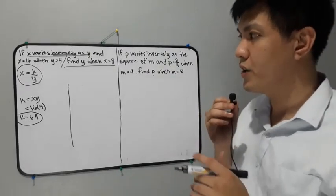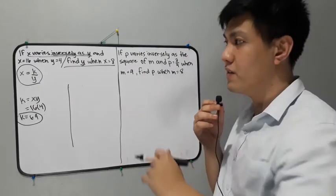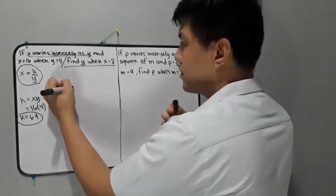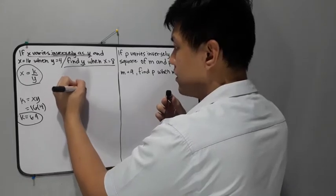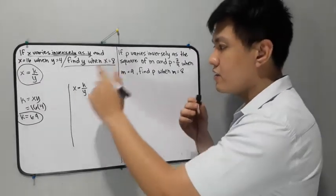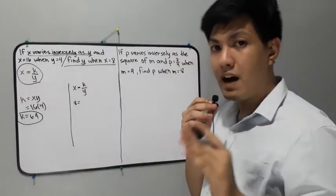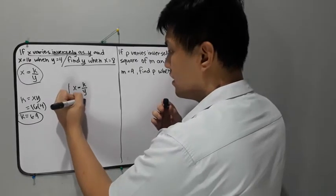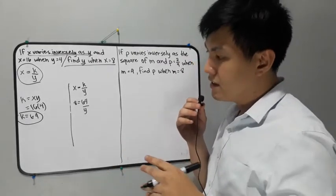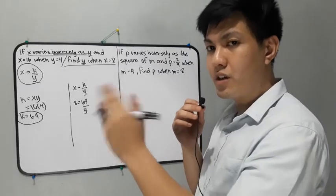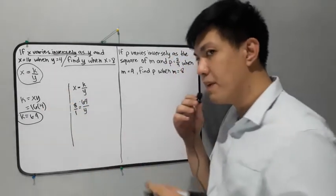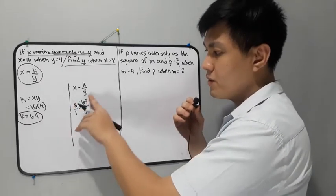After finding the constant, we look for the value of y — that is the second part of the given statement. We use the equation x is equal to k over y. We replace the values: the value of x here is 8, the value of k is 64, and y remains in the denominator. Since y is in the denominator, we use cross multiplication. We place 8 over 1, then cross and multiply.